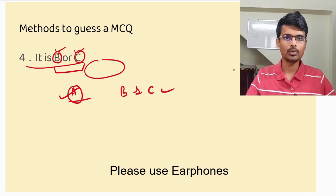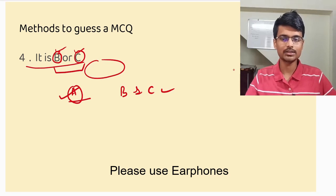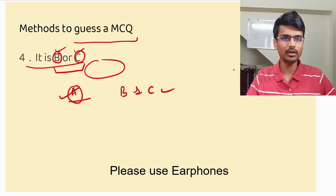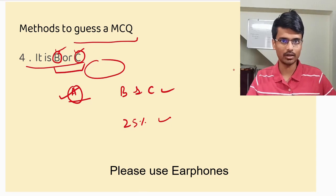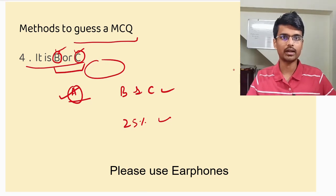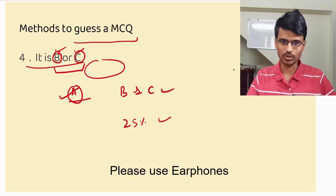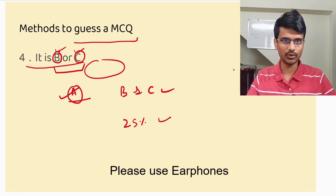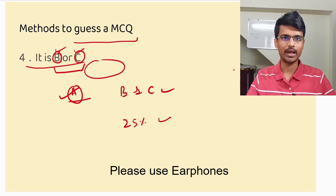These were the four methods. One more thing — these are only smart ways of guessing an MCQ question; this will not guarantee that you will guess correctly. It will only increase your probability of getting it correct. If you are blindly guessing there is only a 25% chance, but by smartly using these methods your chances go higher. I hope these methods are going to be helpful in your examination. If this video was helpful, please like and share it with your friends and subscribe to my channel. All the best for your exam!